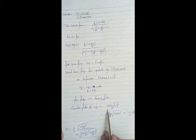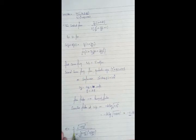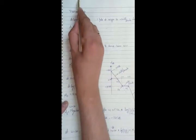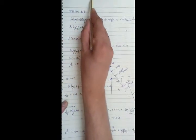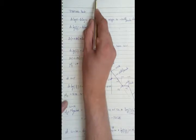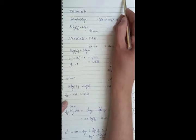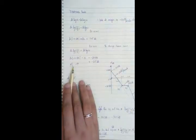The magnitude expression is: |G| = (3/4) · √(1 + (ω/5)²) / [ω · √((1 − ω²/100)² + (16ω/100)²)]. Converting to dB: M_dB = 20log(3/4) + 20log√(1 + (ω/5)²) − 20log(ω) − 20log√((1 − ω²/100)² + (16ω/100)²).